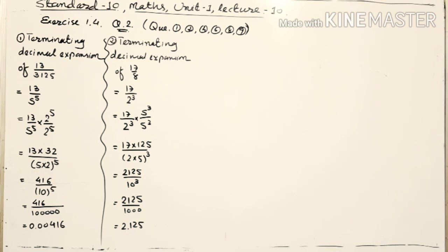In the numerator, after placing the decimal mark, we have to keep 3 digits. So the answer is 2.125.